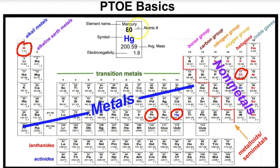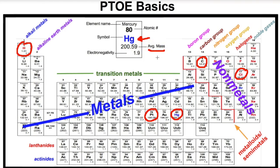Looking at each element box, you'll find the chemical symbol for the element. If the symbol has two letters, the first letter is always uppercase and the second is always lowercase. If it only has one letter, it's capitalized. At the top of the box is the atomic number — the number of protons in the nucleus of that atom. At the bottom is the average atomic mass. This periodic table also shows electronegativity, though that may not appear on all periodic tables.